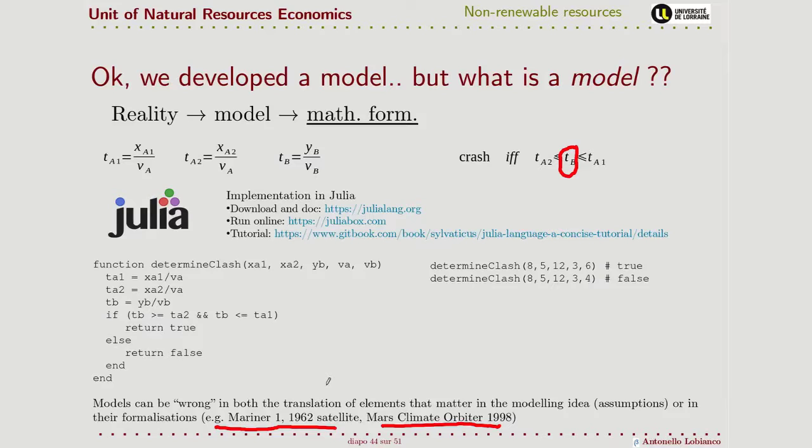Very big computers. There was code where they didn't put a comma. It was a matrix code, so they didn't put the transpose for a matrix, and that was enough to crash the satellite.